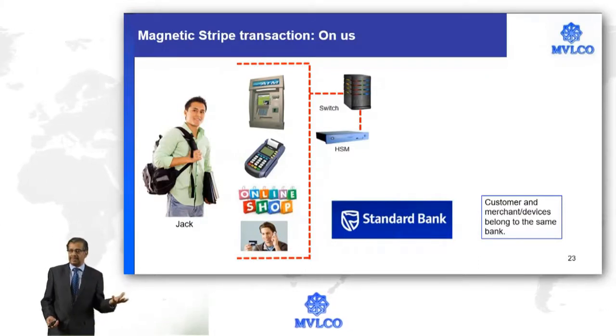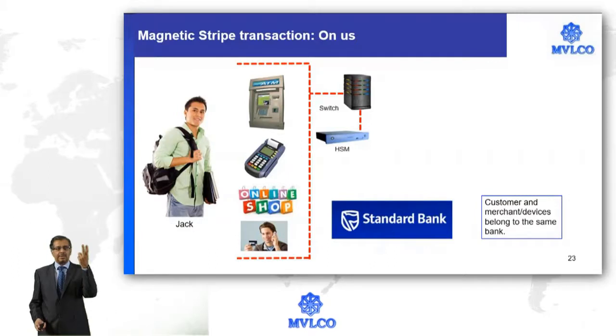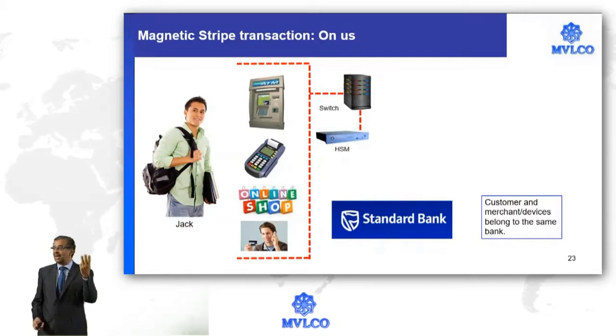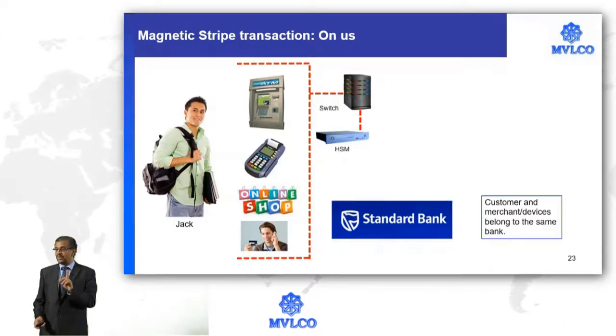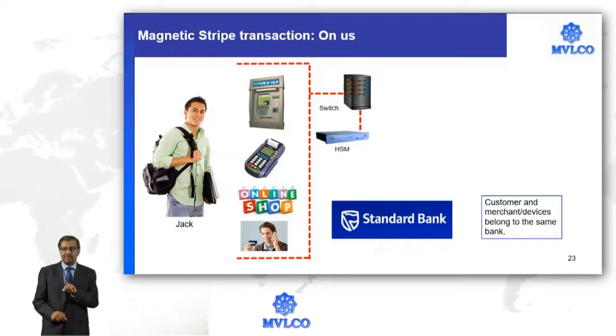Once this is authenticated, then we need to answer the third question: does this party have adequate balance? Assuming this to be either a debit or a credit card, because we said prepaid cards will be hosted on the switch itself.